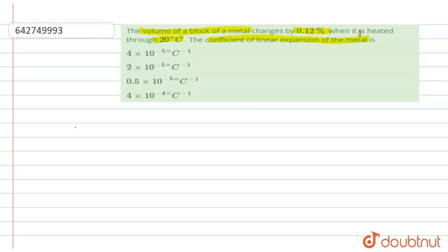Basically we want to calculate the coefficient of linear expansion, so there is a volume of a block is also changing. Now we have one relation that the change in volume ΔV equals γ, that is the volume coefficient, times Δθ, which is a change in temperature. This is 20 degrees Celsius. And we know that this volume coefficient equals three times the coefficient of linear expansion, which is α.